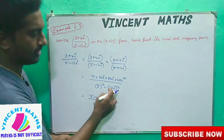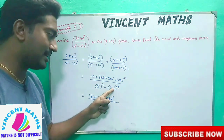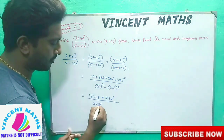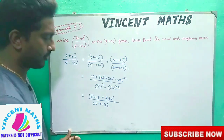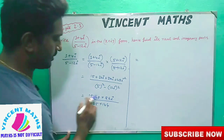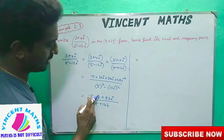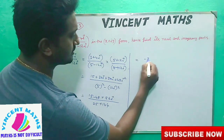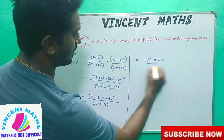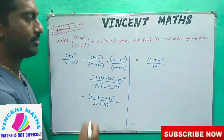12 squared is 144. Since i squared equals minus 1, the denominator becomes 25 plus 144, which equals 169. Now we simplify the numerator: 15 minus 48 equals minus 33, plus 56i. So we have minus 33 plus 56i over 169.